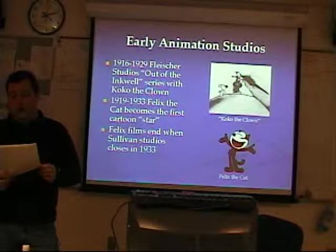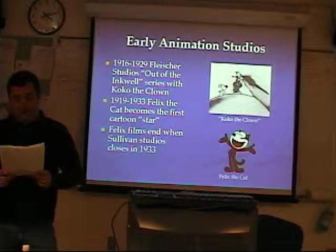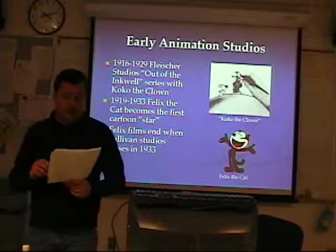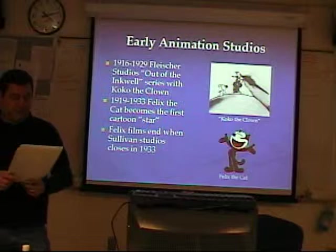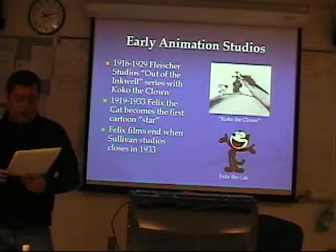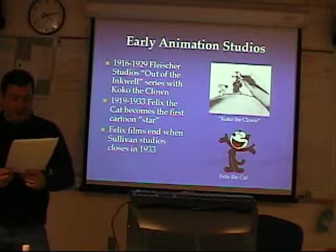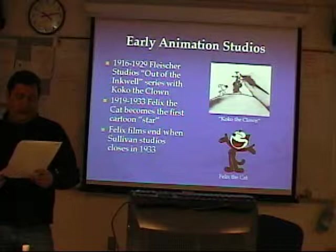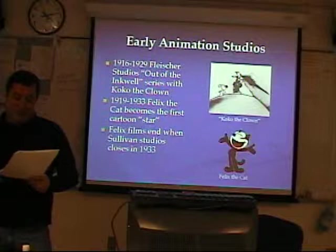As people started going to the movies, the demand for short animated films grew to a point where a real industry could develop. Fleischer Studios was one of the successful ones — from 1916 through 1929, they produced the very successful 'Out of the Inkwell' series featuring Koko the Clown, combining animation and live action. Sullivan Studios had even more success with Otto Messmer's Felix the Cat films. While many other animated films of the day were not much more than moving comic strips, Messmer made Felix much more expressive, making Felix the first real cartoon star. Not only were Felix films very popular, but so was Felix merchandise — the first time an animated character garnered as much or more attention than a movie star.